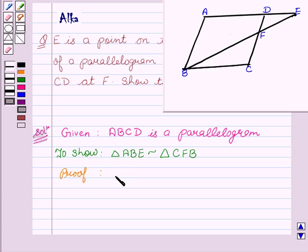In triangle ABE and triangle CFB, we have angle AEB equal to angle CBF. We can see from the figure that angle AEB is equal to angle CBF since they are alternate angles.